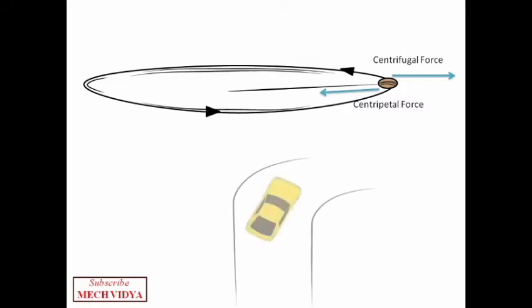If we see another example where a car is on the verge of taking a turn, the centripetal force can be seen acting toward the center, while the force that acts outward is known as the centrifugal force. So whenever a body moves along a circular path, centrifugal force tries to throw that body radially outward. Just remember this thing.